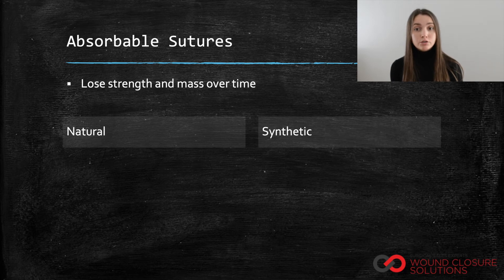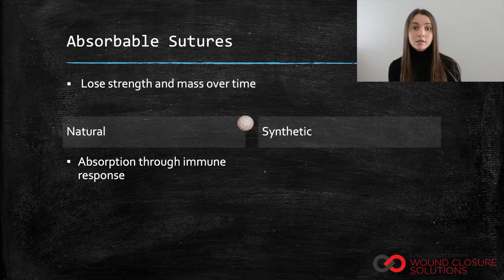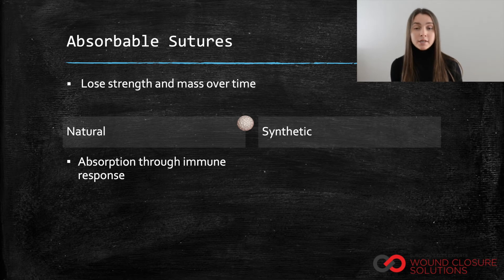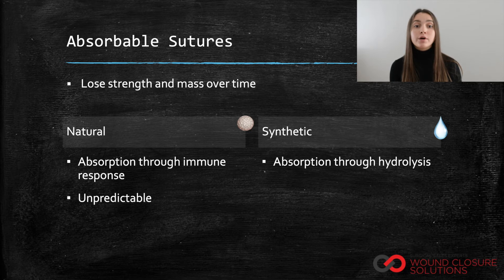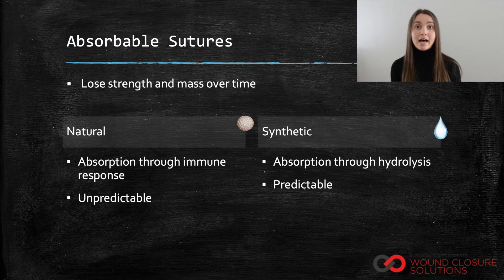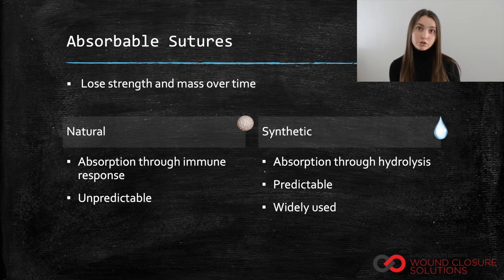Absorption of natural sutures is led by an immune response that involves white blood cells attacking and removing the foreign material. Degeneration of natural materials can sometimes be unpredictable depending on patient factors. On the other hand, synthetic absorbable sutures are absorbed through the process of hydrolysis, whereby bodily fluids break up the chemical bonds of the polymer. Degeneration of synthetic materials is far more predictable, which contributes greatly to synthetic absorbable sutures being used more widely compared to natural absorbable sutures.